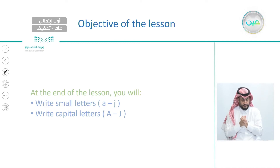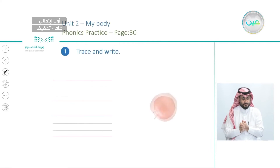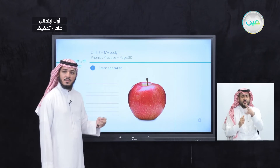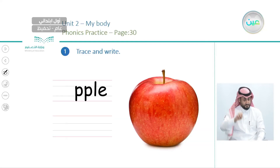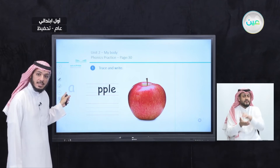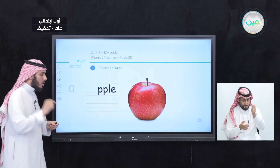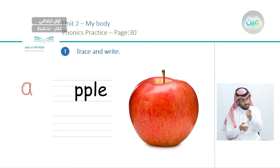What is the objective of our lesson today? At the end of the lesson, you will write small letters A to J and write capital letters A to J. Now let's start. Can you tell me what is this? We eat an apple. Excellent. Apple. So we have A, apple. Is this capital or small letter? It is small.